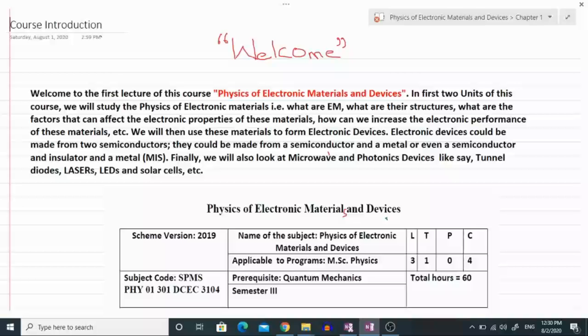Finally, we will also look at some microwave and photonics devices like tunnel diodes, lasers, LEDs, solar cells, photodetectors, etc.